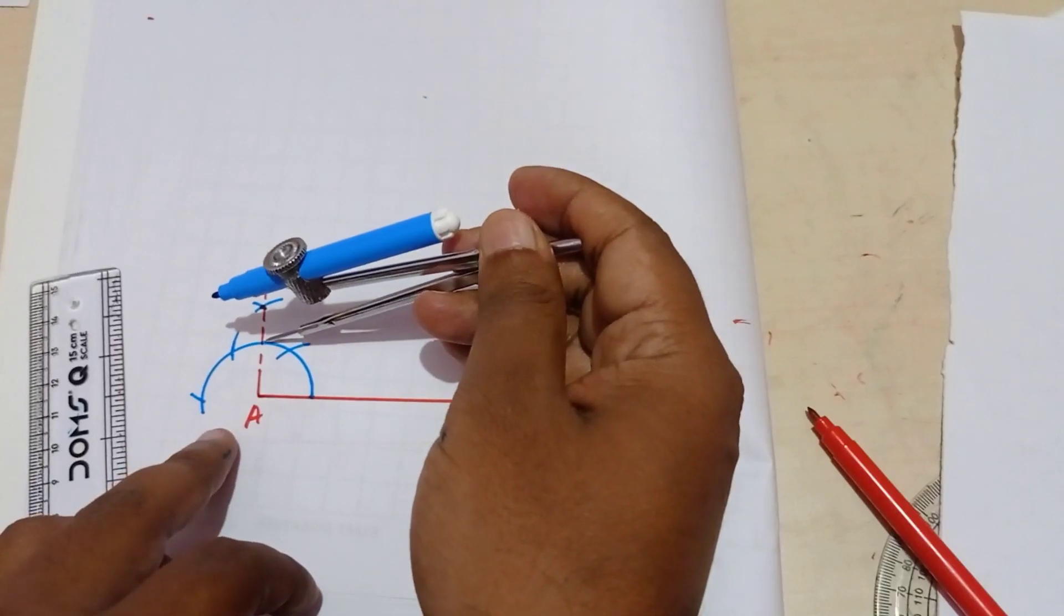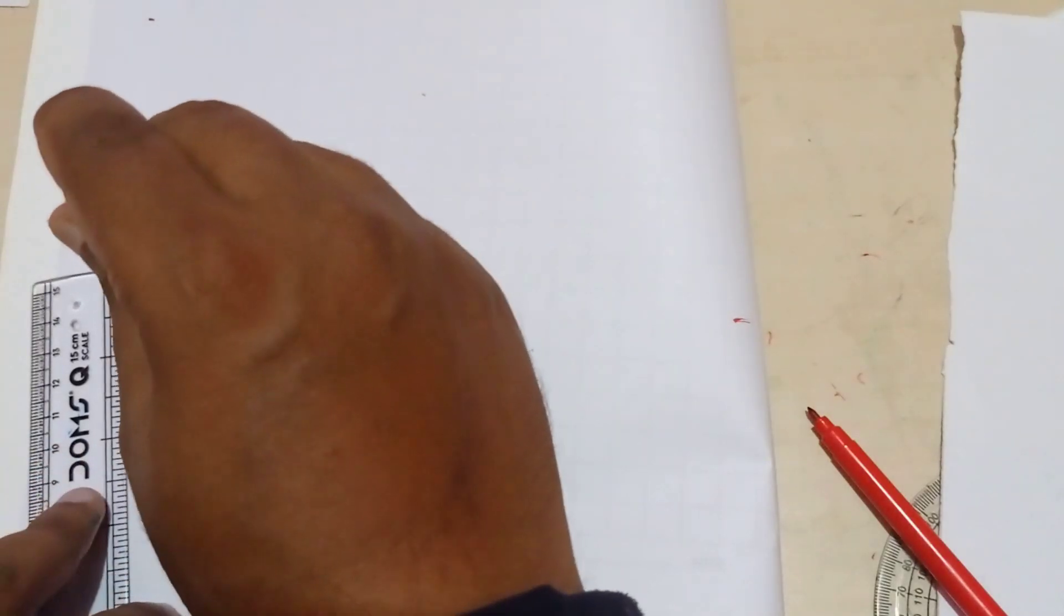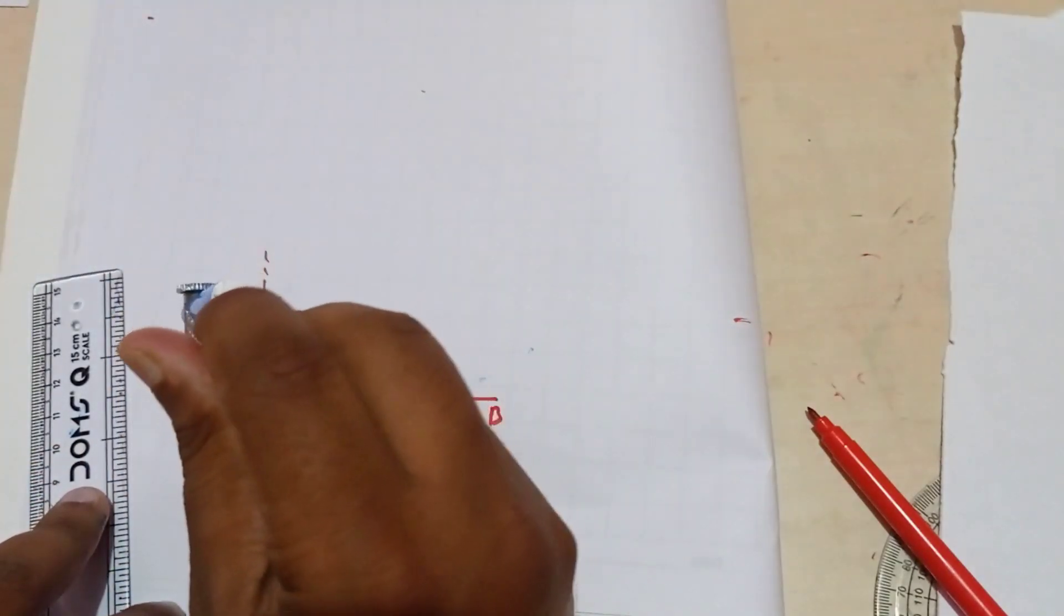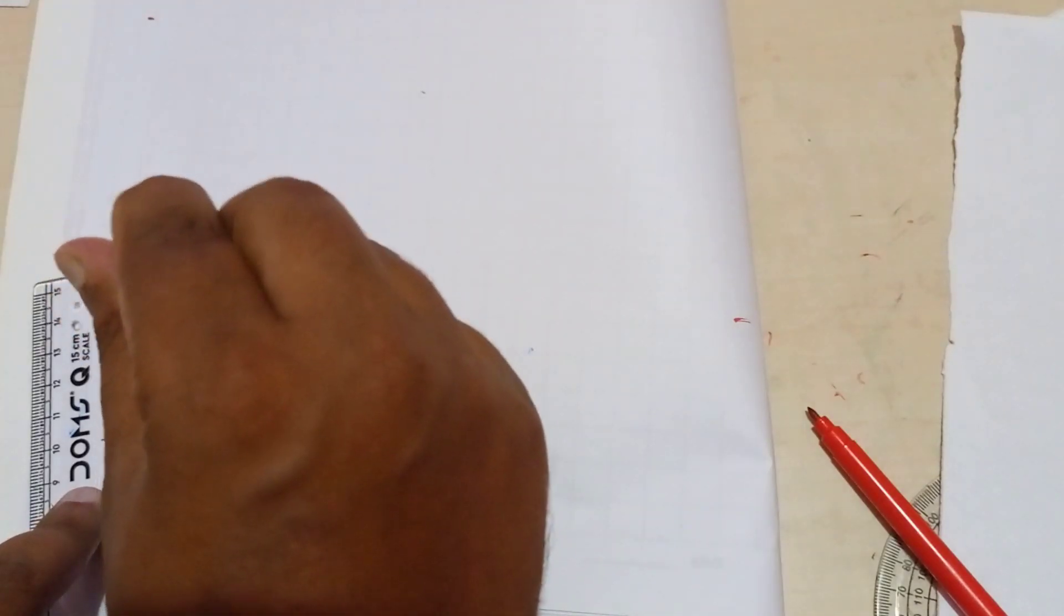By just take the length more than this half. And draw an arc from this point. From this point also just cut it.